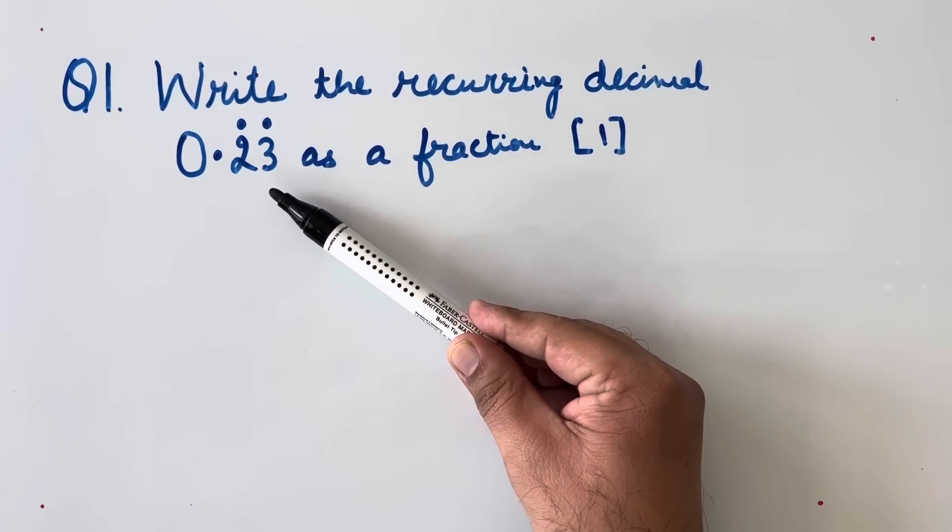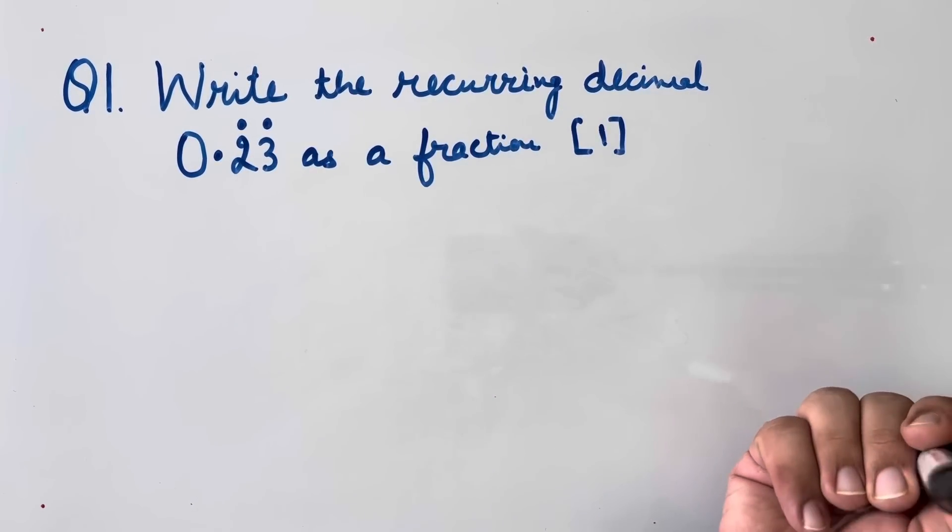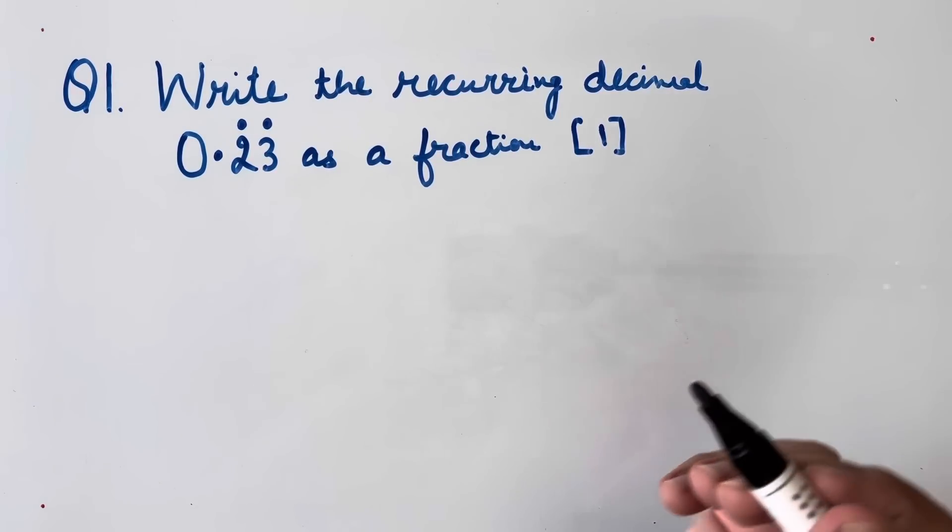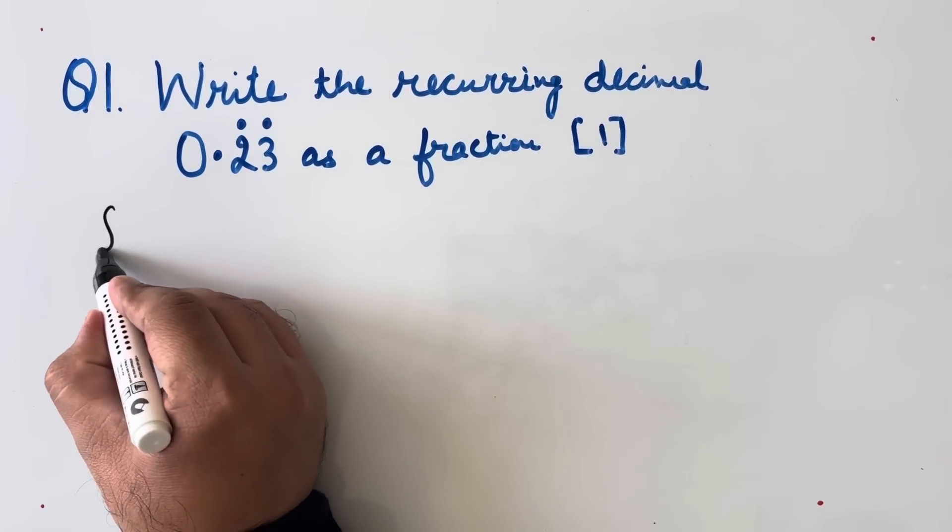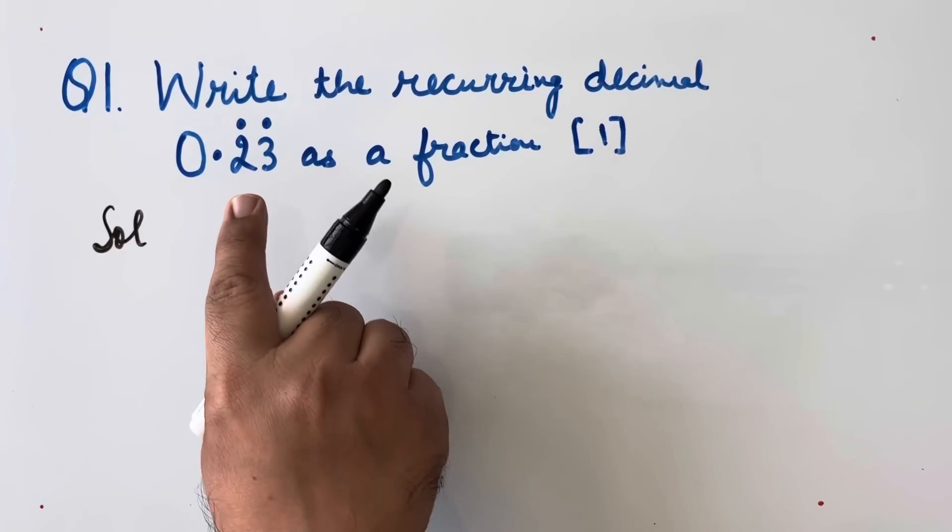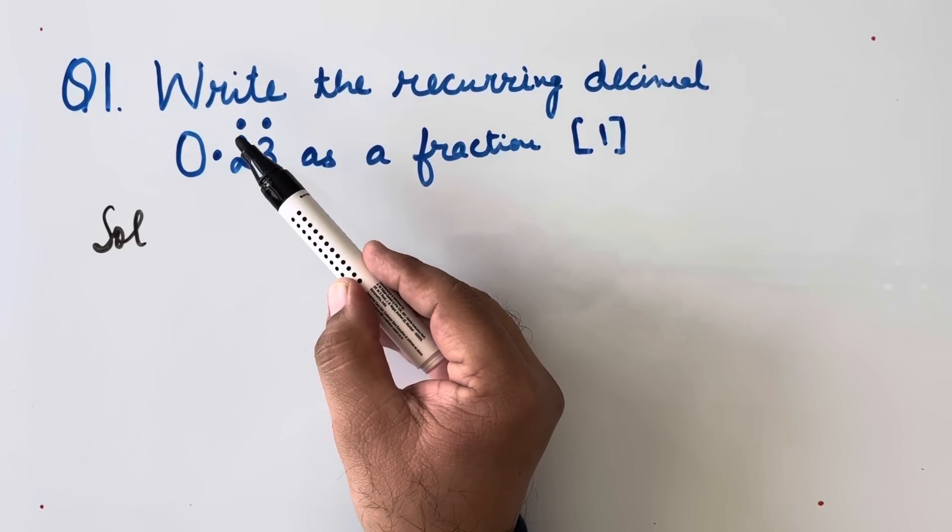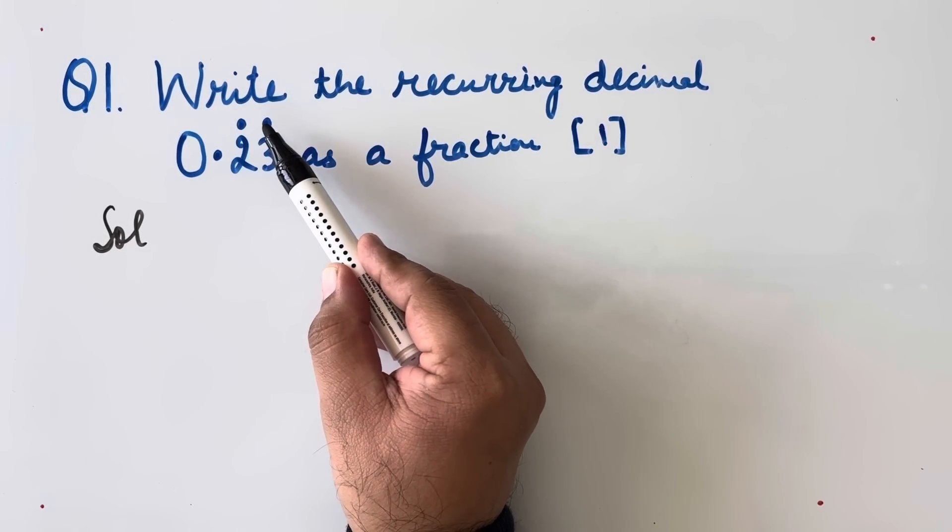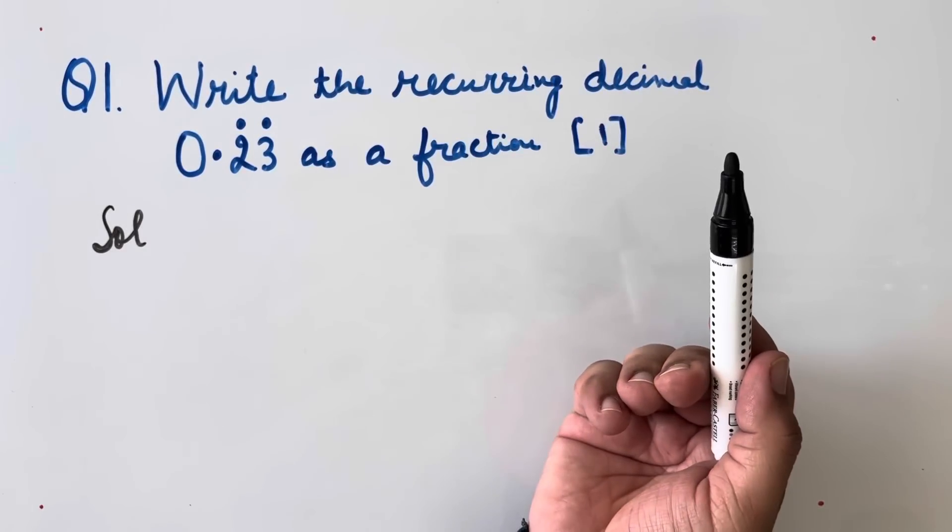Write the recurring decimal as fraction. This question is of one mark. Now let us solve it. Because we have two places of recurrence, we will be multiplying with 100.